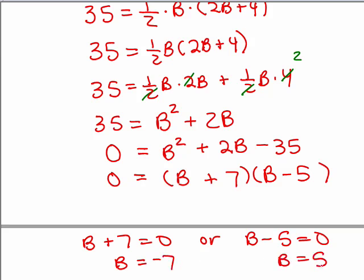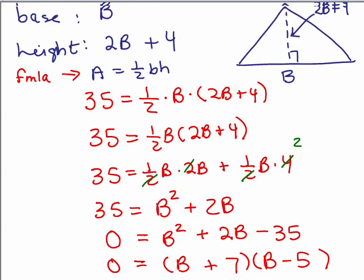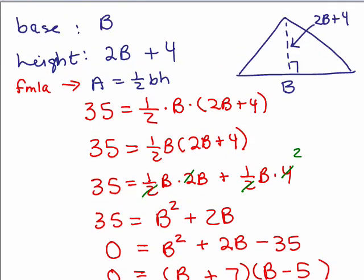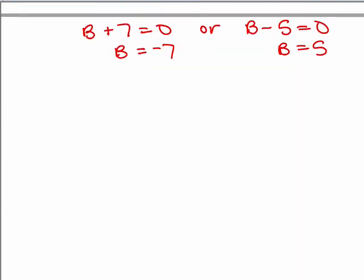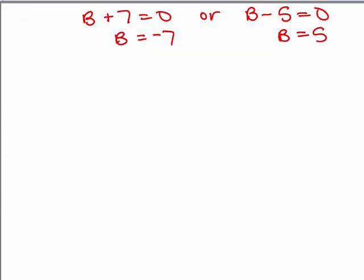Now, what does B stand for? The base, that's a length, you certainly can't have a negative length, so you know what, this doesn't make any sense, you can't have a negative base, but maybe the base is 5.